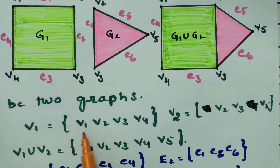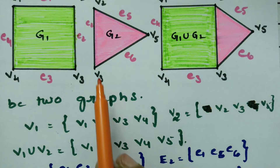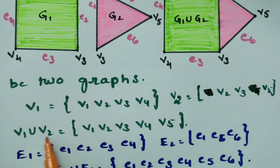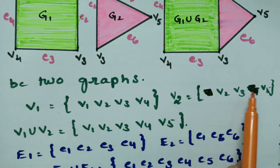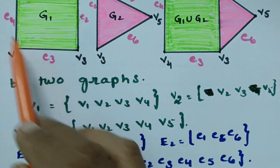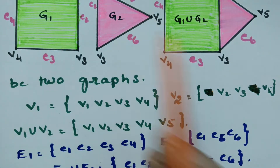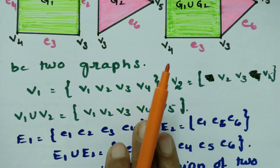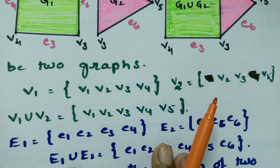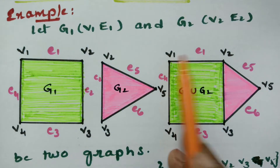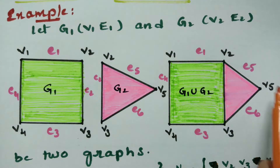Graph g1 has four vertices and g2 has vertices v2, v3, v5. The union v1 ∪ v2 is nothing but {v1, v2, v3, v4, v5}. The edges in g1 are e1, e2, e3, e4, and the edges in g2 are e2, e5, e6, giving a combined edge set of e1 through e6.